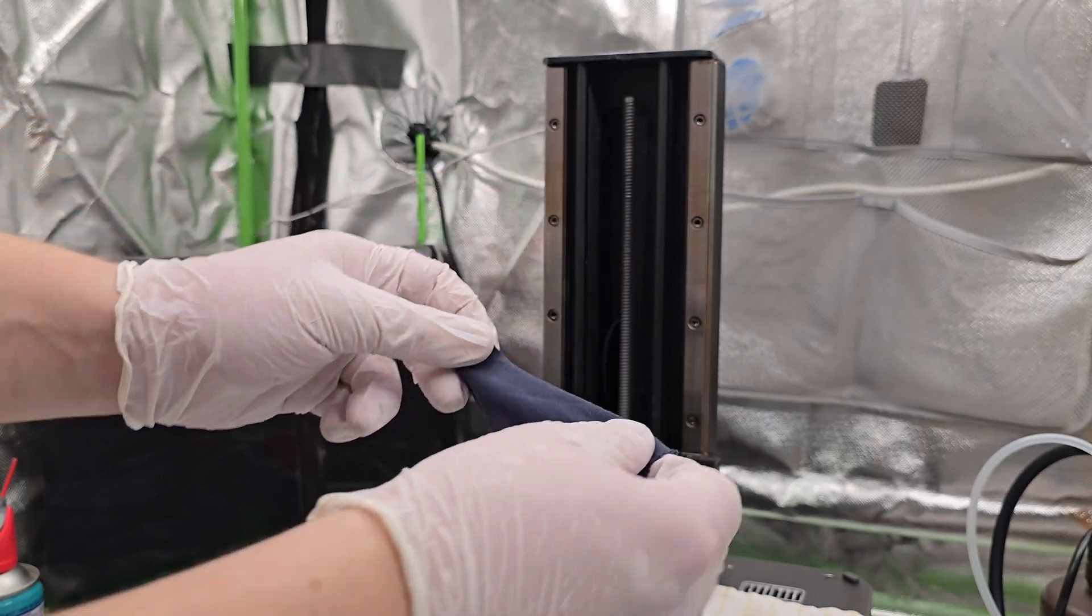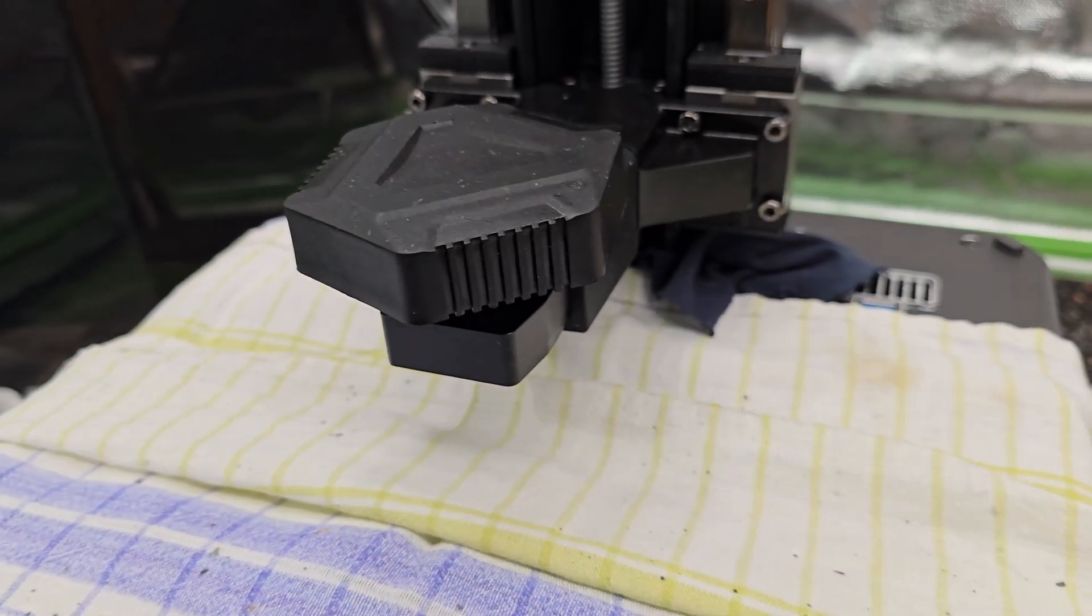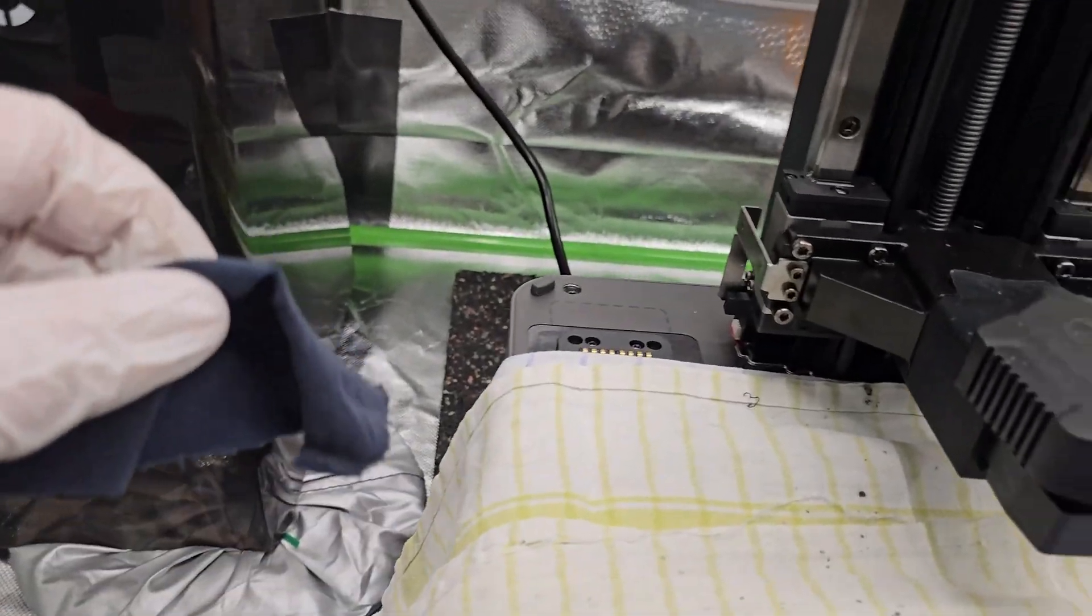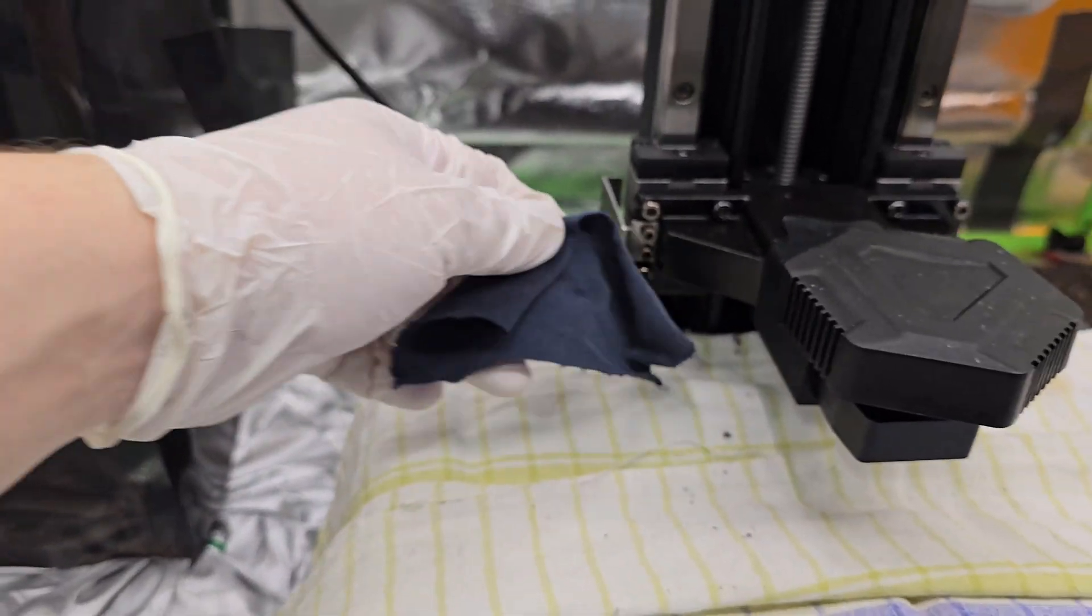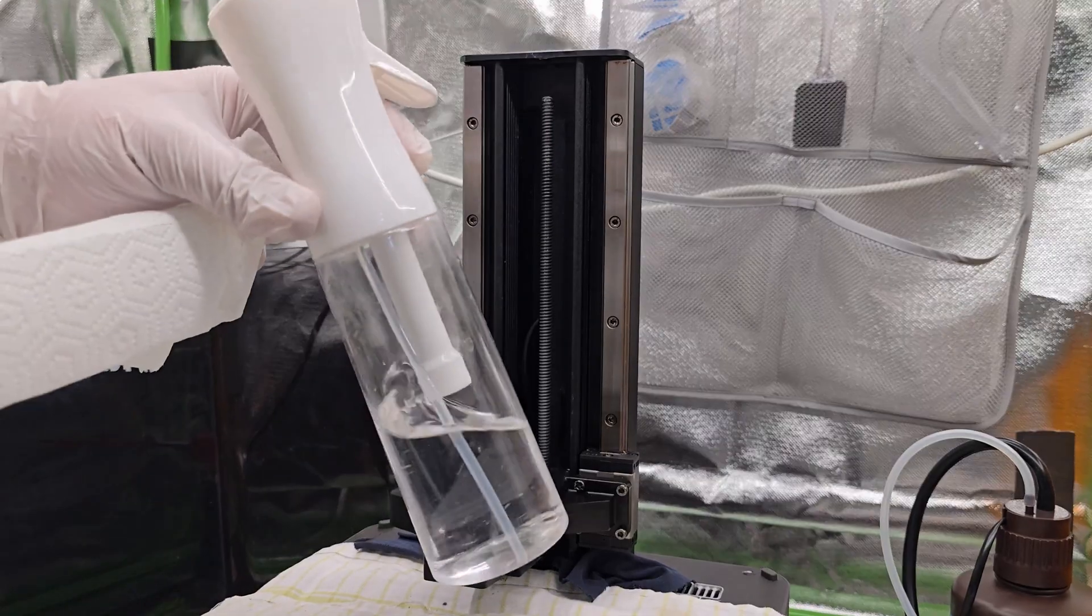Next we will clean the rails. Move the platform all the way down and place some paper towels or some old cloth underneath the rails to catch any drips. First, wipe the rails with IPA.